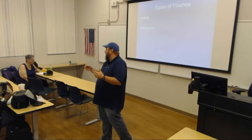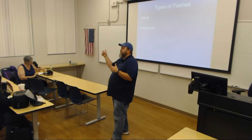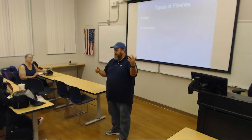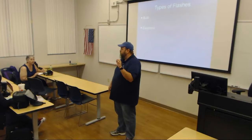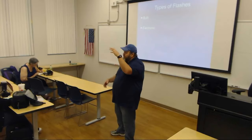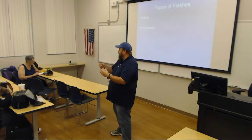When it comes to strobe flashes, there are three varieties: automatic, semi-automatic, and hybrid. Automatic flashes might also be called dedicated or TTL, which stands for through the lens. An automatic flash is controlled by the camera — the camera's light meter determines how much light is needed and then turns the flash up or down in terms of its power.